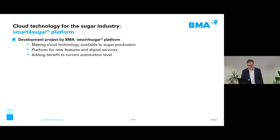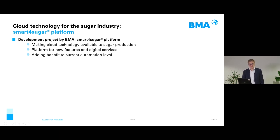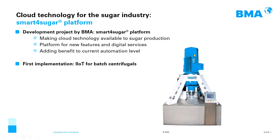Let's go to a realization project in the sugar industry which BMA started in 2018. With the development of the Smart for Sugar platform, we would like to make cloud technology available for sugar production. Starting from the current automation level we see across sugar factories, we would like to add new features and digital services. It is clear that an added benefit drives this project. Our first implementation is the application of IIoT to batch centrifugals.